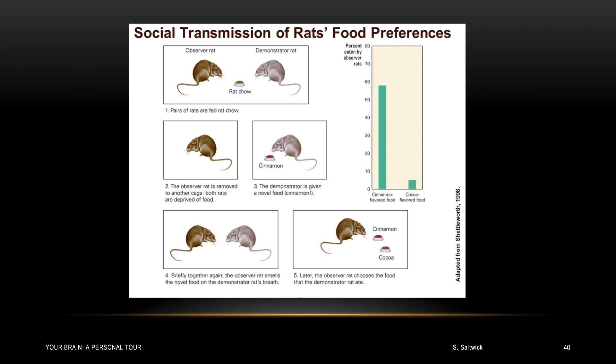After that, the rats are separated. The observer goes away into a completely different room. The demonstrator is then given some uniquely flavored food. Turns out that rats love cinnamon on the rat chow. After the demonstrator has eaten the cinnamon, we bring the observer rat back together with the demonstrator and they socially interact. When rats do that, they smell each other's breath. After that reunion, we present the observer rat with a food choice. One choice is the cinnamon, which the demonstrator rat has eaten and that the observer rat has smelled on his breath. And the other choice is cocoa rat chow, which neither rat has eaten. When presented with this choice, the observer shows an incredible preference for the cinnamon flavored food. Now this makes a lot of sense. If you smell a unique food on the breath of one of your rat pals and he's not dead, well that's probably a pretty good food to eat and a good memory to have.